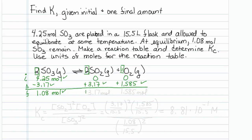Now I can just do the bookkeeping. My SO2 equilibrium amount is 3.17 moles and my O2 equilibrium amount is 1.585 moles. My reaction table is done. Now it's time to get my equilibrium constant. The expression is SO2 squared times O2 to the first power, over SO3 squared.